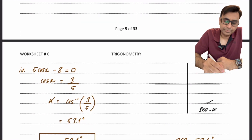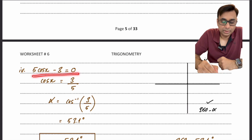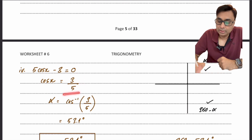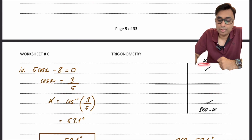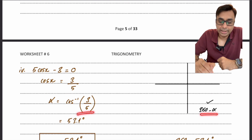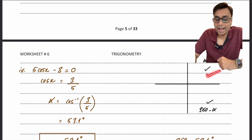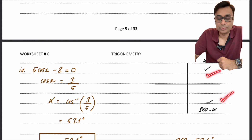Sometimes you need algebraic rearrangement first. Rearranging the equation gives cos x equals 3/5, which is positive, so we pick the first and fourth quadrants. First quadrant is alpha and fourth is 360 minus alpha. Taking cos⁻¹(3/5) gives a basic angle of 53.1°. The first answer is 53.1° and the other is 360 minus 53.1°.